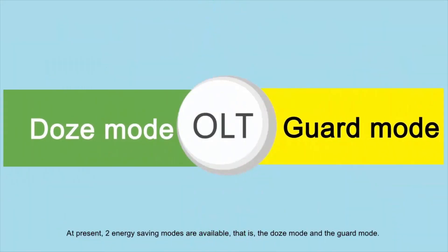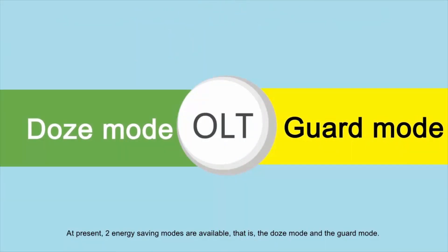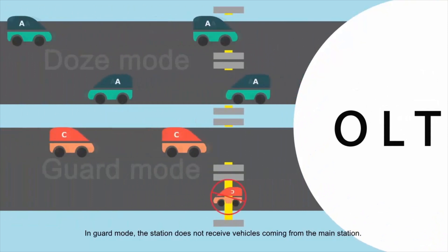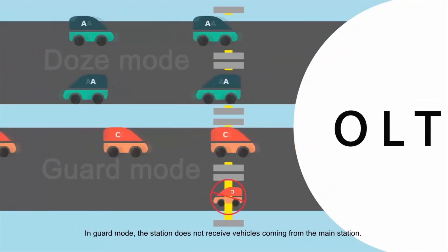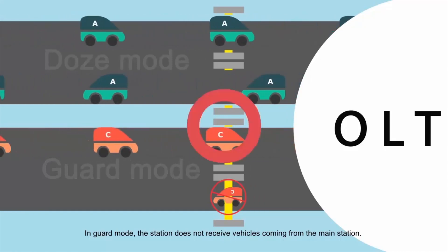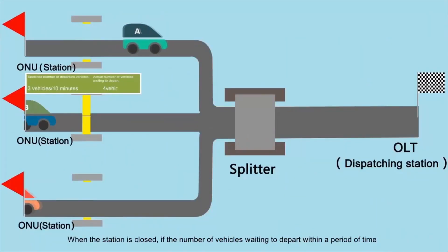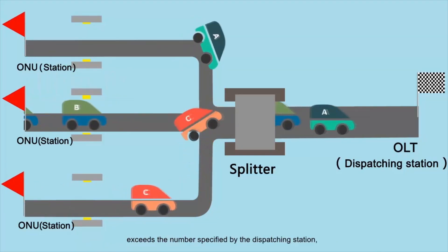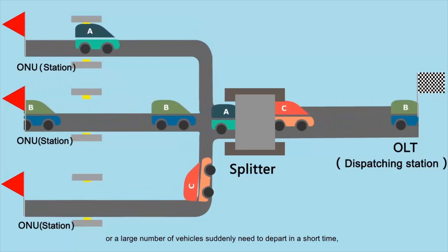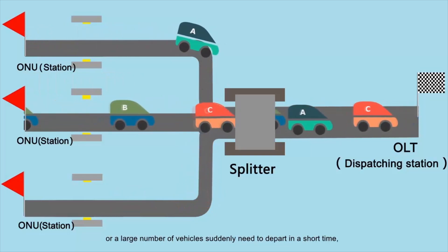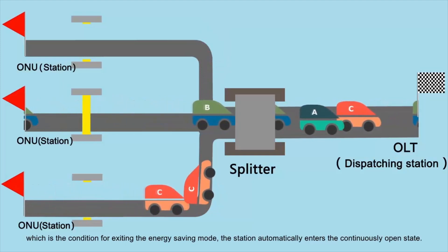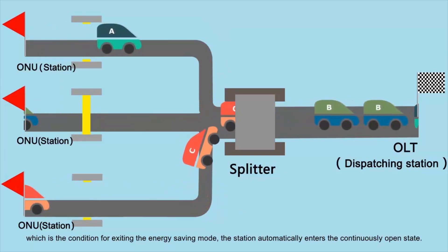At present, two Energy Saving Modes are available: the Dose Mode and the Guard Mode. In Dose Mode, the station can still receive vehicles coming from the main station. In Guard Mode, the station does not receive vehicles coming from the main station. When the station is closed, if the number of vehicles waiting to depart exceeds the number specified by the dispatching station — where a large number of vehicles suddenly need to depart in a short time — the station automatically enters the continuous open state.